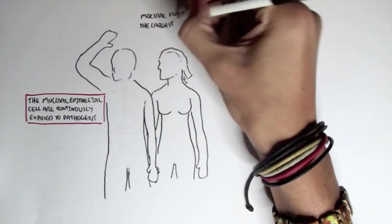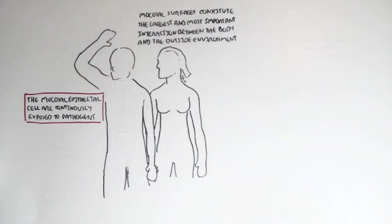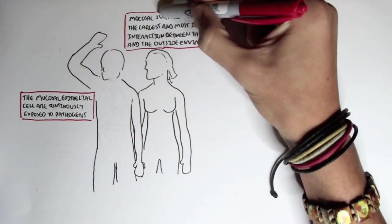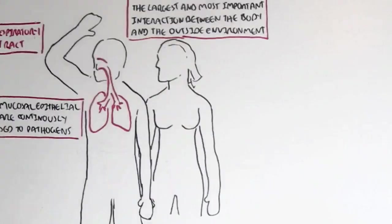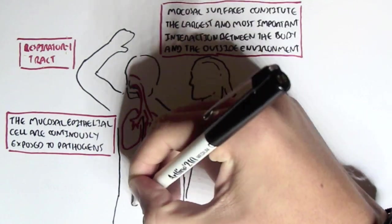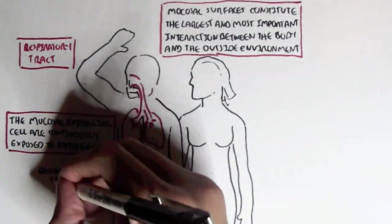The mucosal surfaces constitute the largest and most important interaction between the body and the outside environment. The mucosal surfaces include the respiratory tract, the gastrointestinal tract and the urogenital tract.